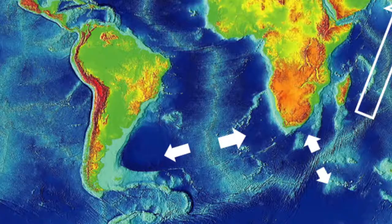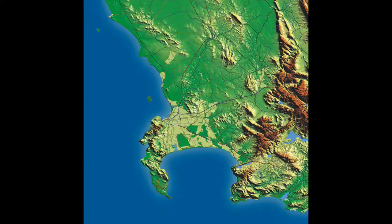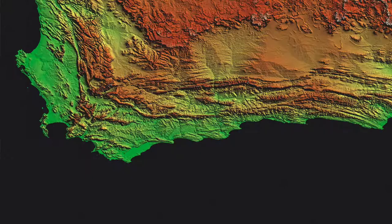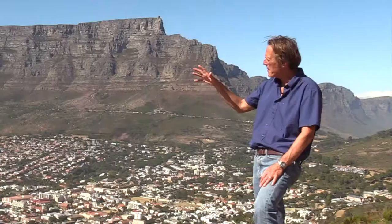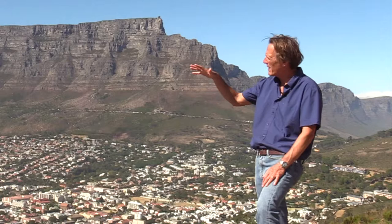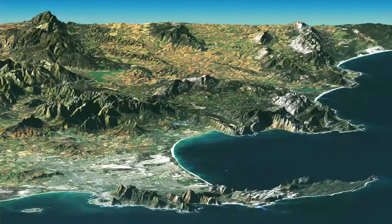Gondwana didn't last forever. It broke up, forming the South Atlantic Ocean Basin and the Southern Ocean. With that came uplift and erosion, forming the very extensive coastal plain and the low-lying areas along the coast. What we see today is the erosional remains of this much larger mountain system, including Table Mountain and all the mountains of the Cape Fold Belt, whose sandstone units were all continuous at one stage.